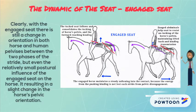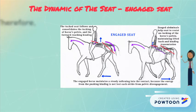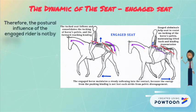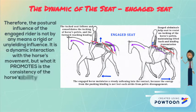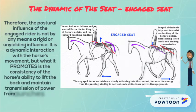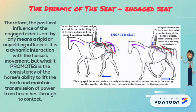Even the relatively small postural influence of the English seat on the horse resulted in a slight change in the horse's pelvic orientation. Therefore, the postural influence of the engaged rider is not by any means an insignificant or unneeded influence. It is a dynamic interaction with the horse's movement, and what it promotes is the consistency of the horse's ability to lift the back and maintain transmission of power from hindquarters through to contact.